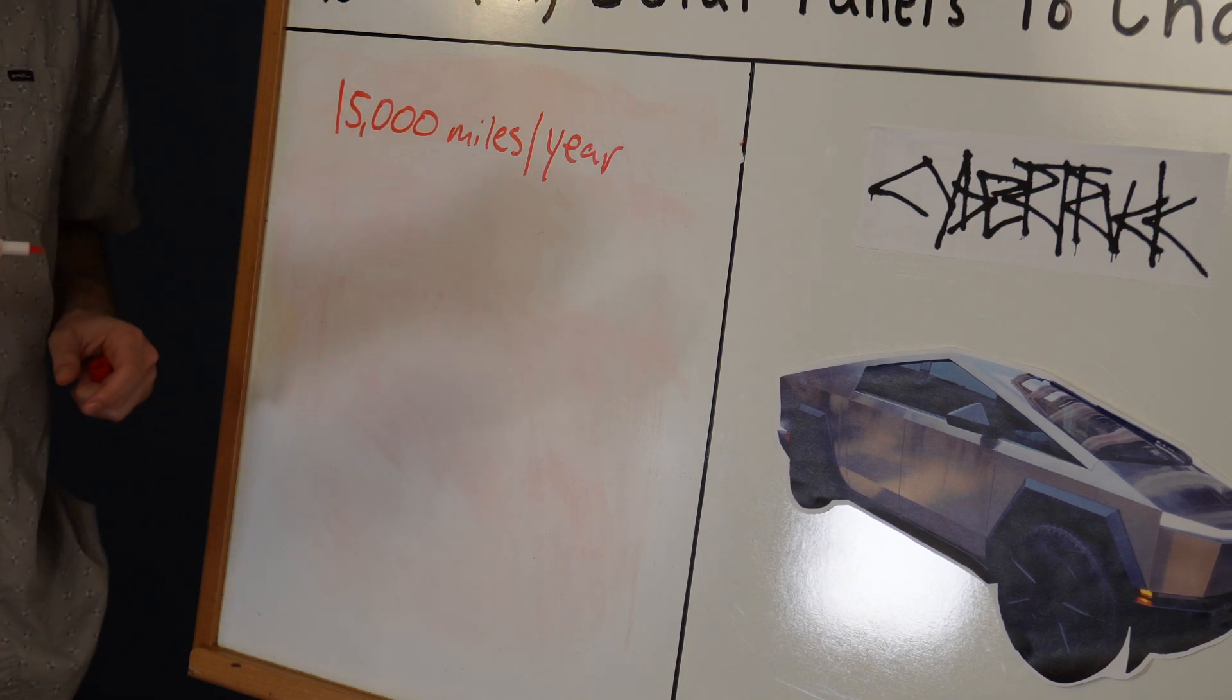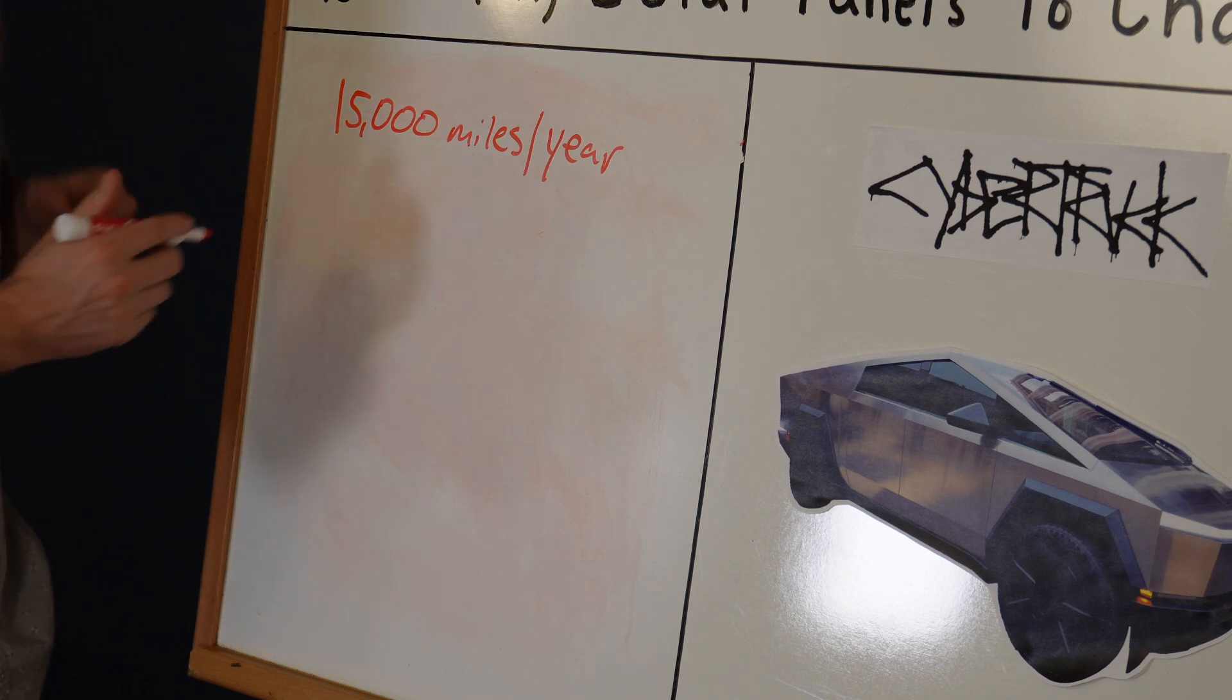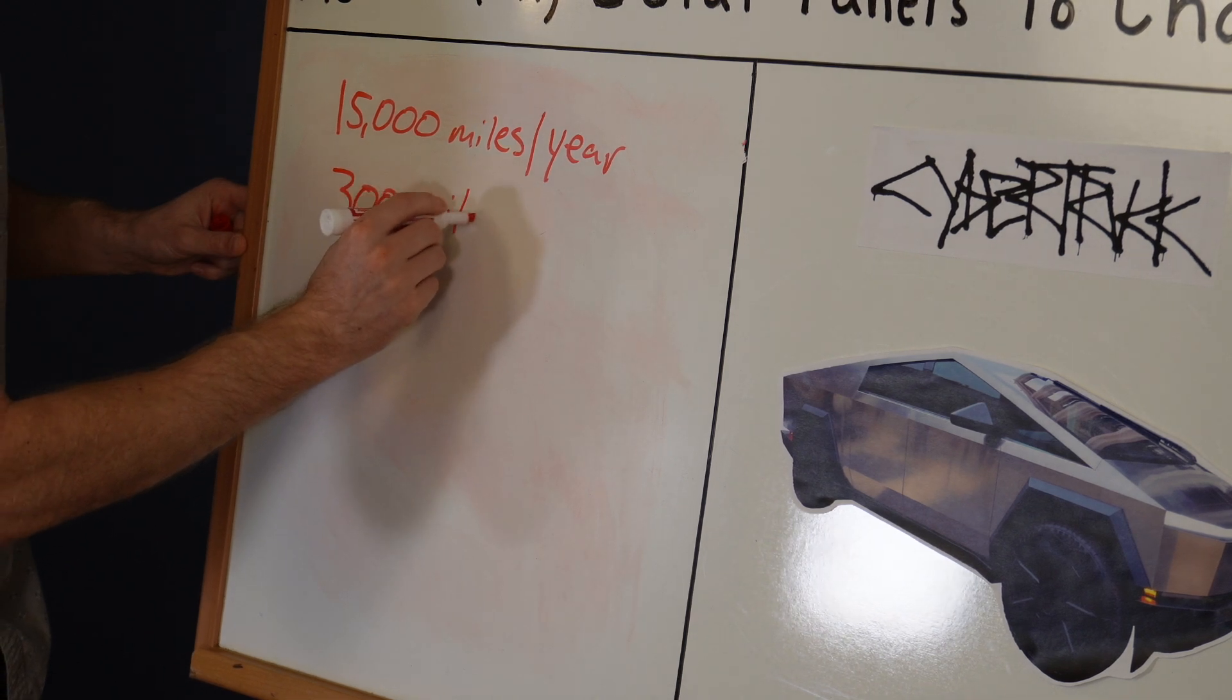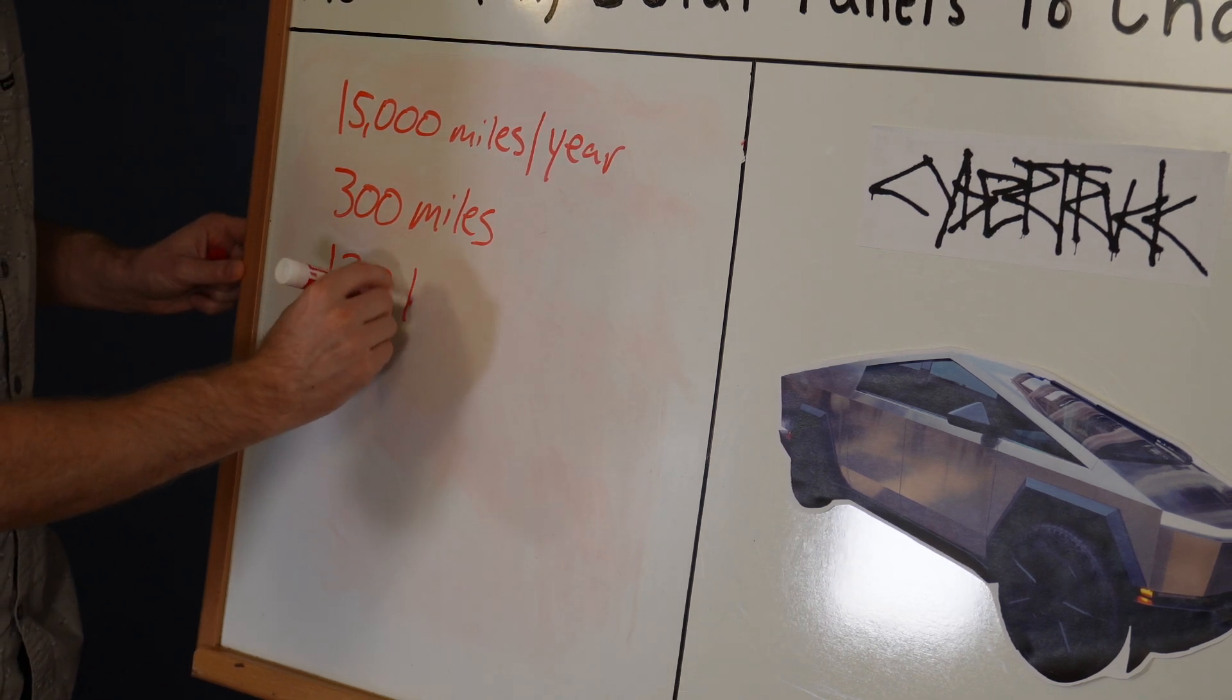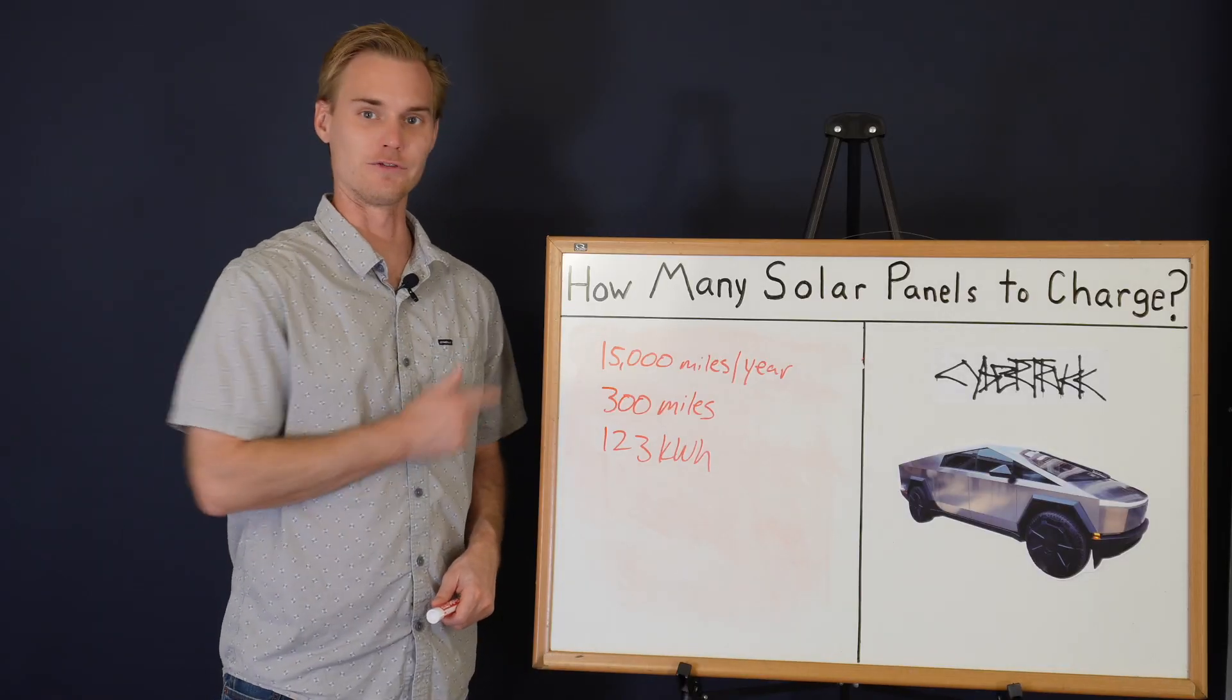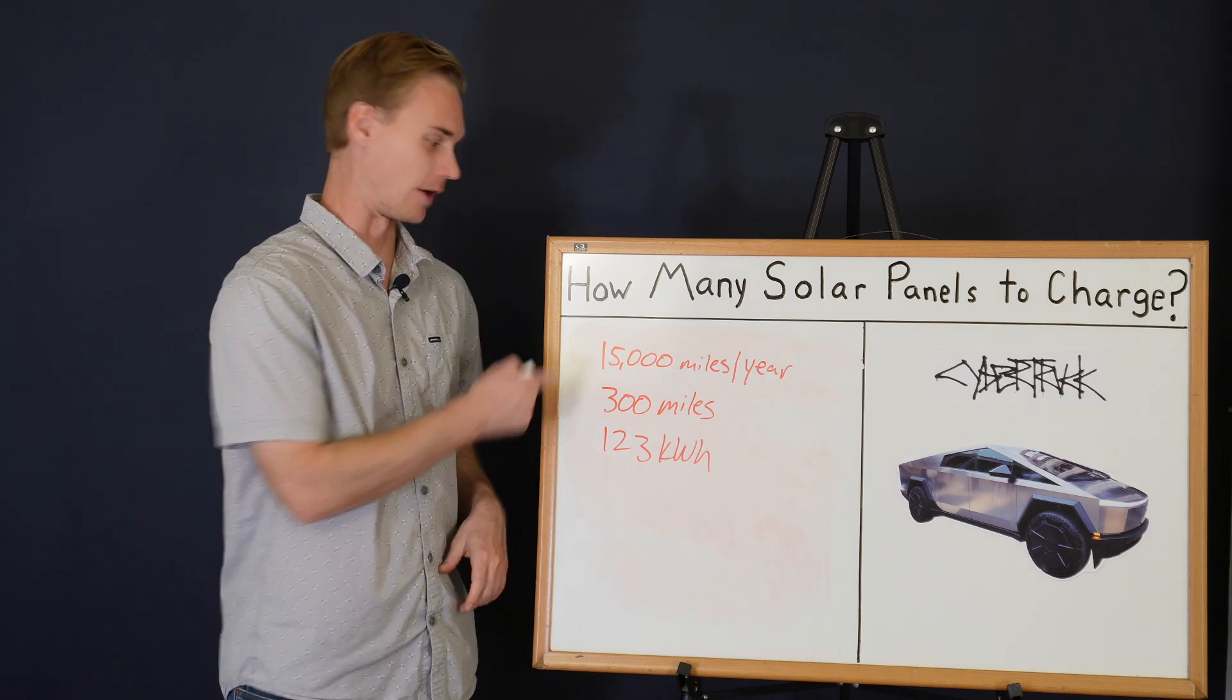We know that this Cybertruck is supposed to go 320 miles off of one full charge, but we all know that you're going to get less than that in reality, so let's assume that you're going to get 300 miles out of a full charge. We also know that that battery is 123 kilowatt hours. Taking these three figures into account, how do we figure out how many kilowatt hours you're actually going to need on an annual basis?